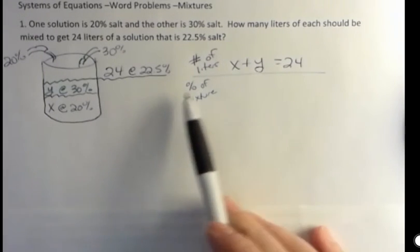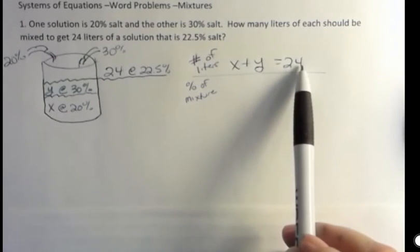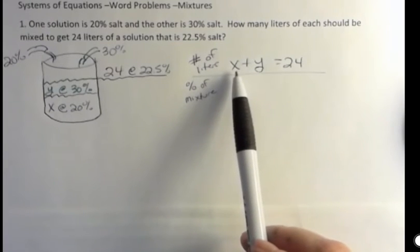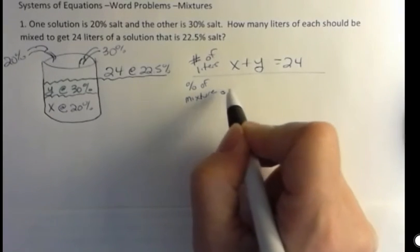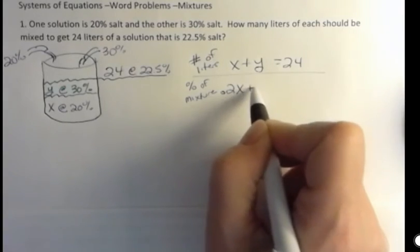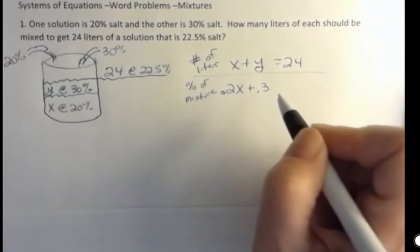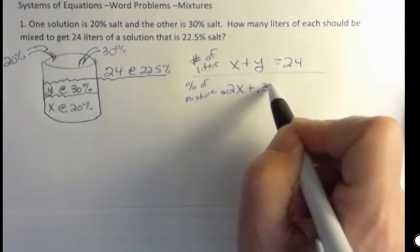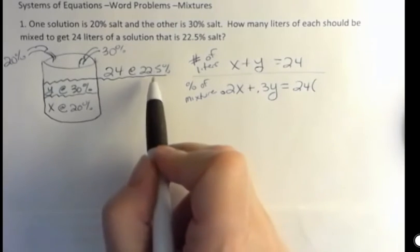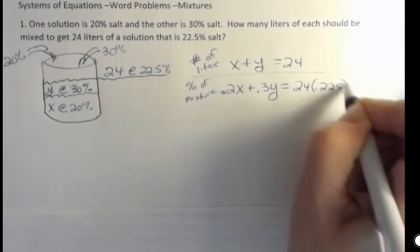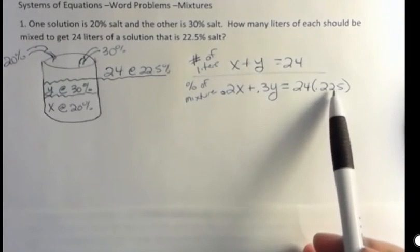My second mixture percentage problem, or equation, I just multiply each one of these things from the first equation with its corresponding percent. Remember to change it to a decimal. So 20% is 0.2. So I have 0.2 times X. And then for 30, that's 0.3 Y. And then I have 24 times 0.225. So that's just taking directly above it and multiplying each one of those with the percent that goes with it.